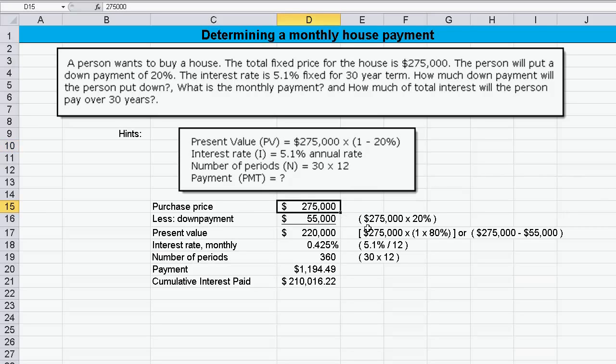If we take the purchase price at $275,000, subtract the down payment. Now, how did I get that? I'll hit the F2. I said equal $275,000 times 20%. That gives me $55,000, so we've answered how much the down payment will be. Then if we subtract one from the other, we'll get $220,000.